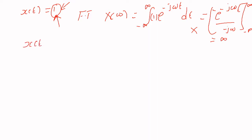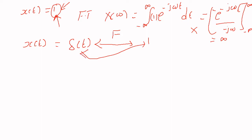If x(t) = δ(t), by taking the Fourier transform, what we get is 1. So δ(t) and 1 are nothing but Fourier pairs, because Fourier transform is a one-to-one mapping and an inverse mapping is possible. Since the inverse Fourier transform exists, δ(t) and 1 form a Fourier pair — this is one important thing we know.